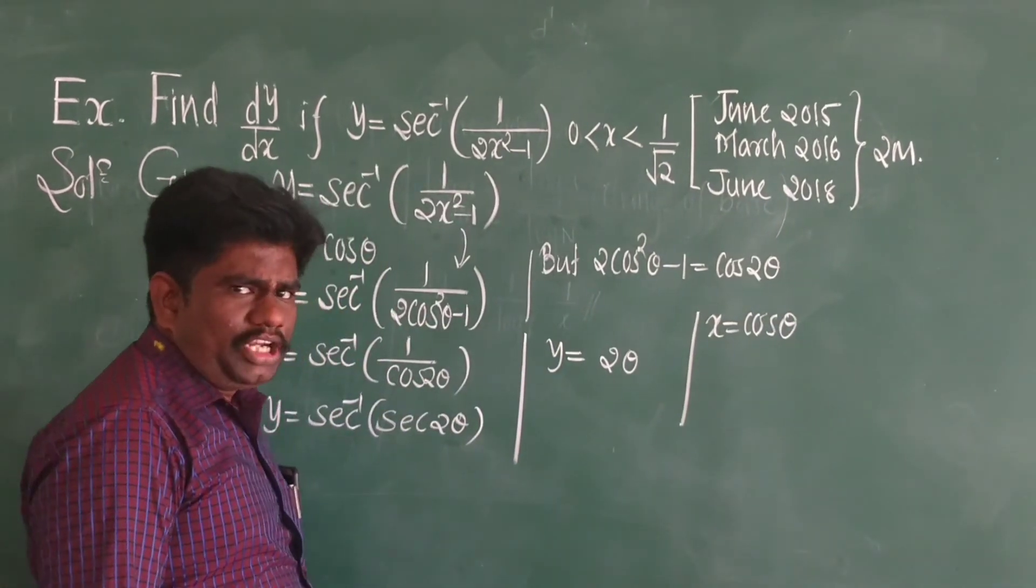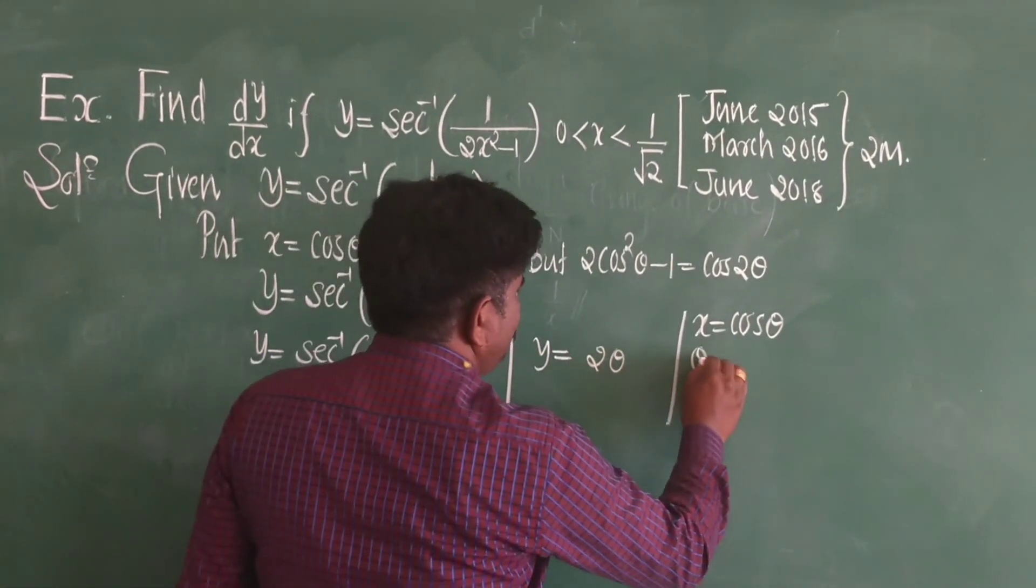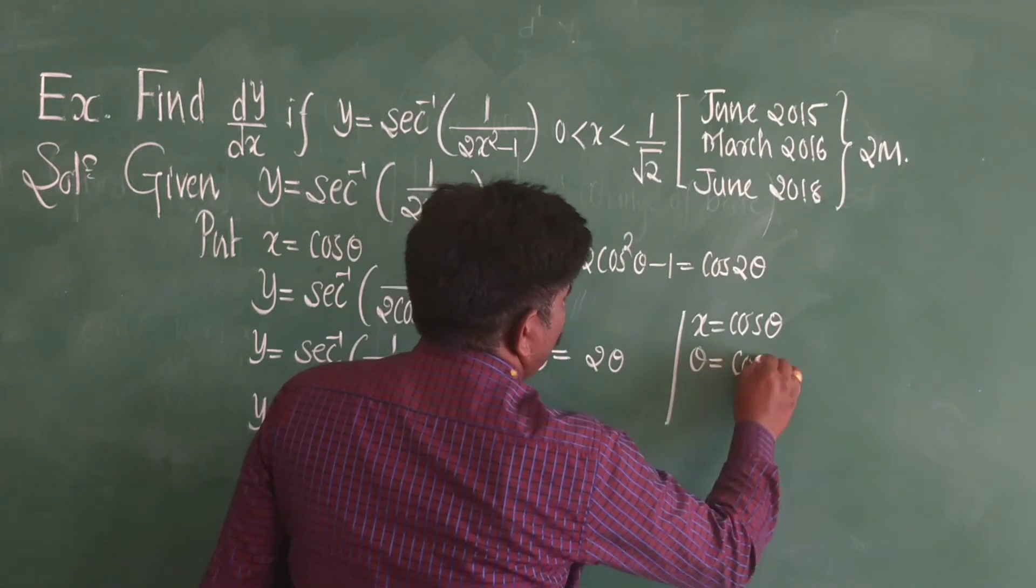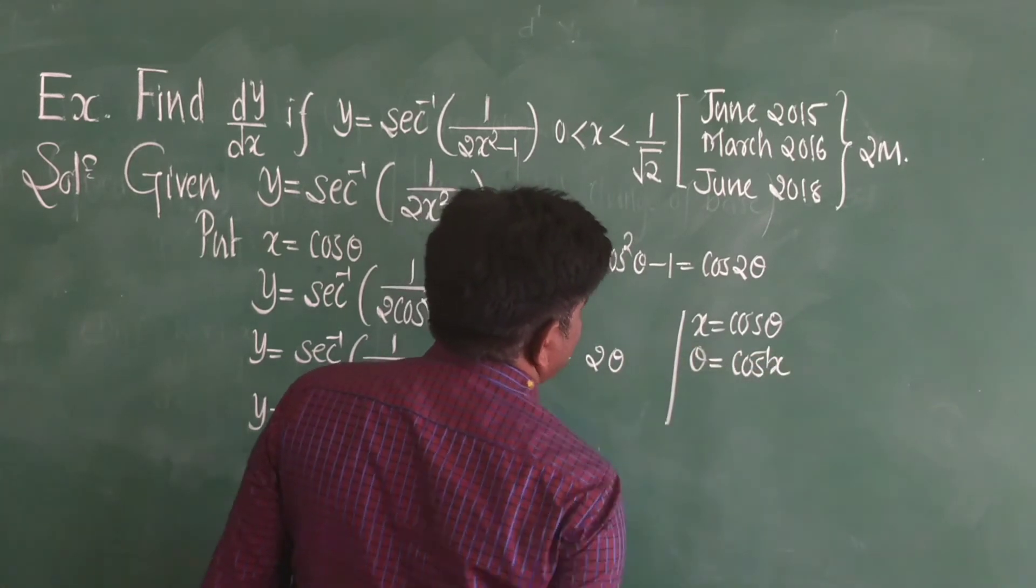By inverse trigonometric function, theta will be equal to cos inverse x.